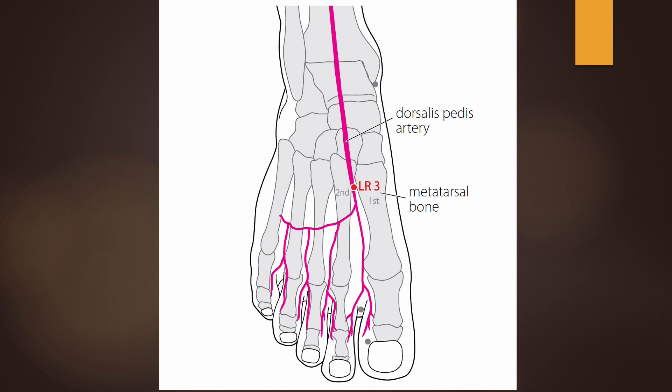Liver 3 relaxes muscles and sinews. Location: on the dorsum of the foot, in the depression proximal to the first metatarsal space. Liver 3 is the Yuan source point and shu-stream point of the liver meridian. Functions: regulates liver qi, subdues liver yang, regulates menstruation, calms the shen, nourishes liver yin. Liver 3 is a very important and commonly used point. It is often coupled with LI-4 — known as the four gates — to effectively move the qi and blood throughout the body. Needling: perpendicular insertion 0.5 to 0.8 cun.